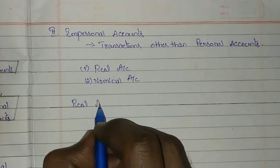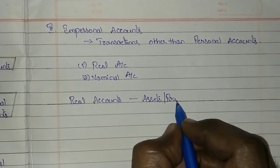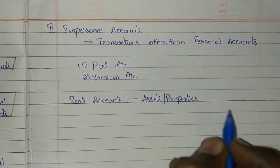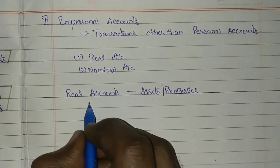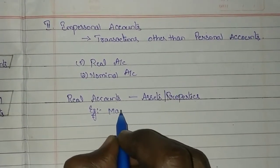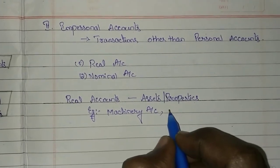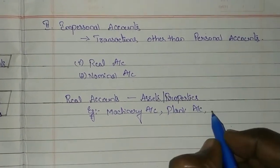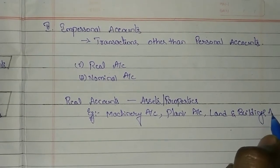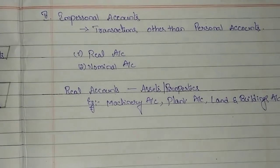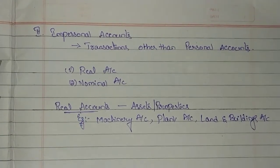The first type under impersonal accounts is real accounts. Real accounts are those related to the assets or properties of the business organization. Whatever assets you are having — purchasing and sale of assets and business properties — those transactions will come under real accounts. Examples include machinery account, plant account, and land and buildings.